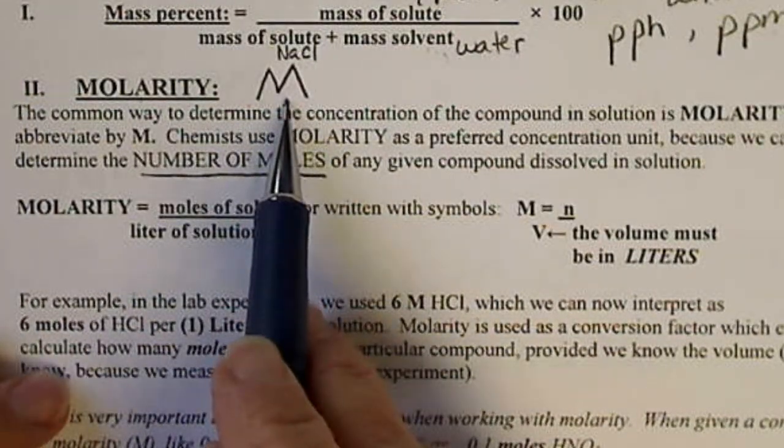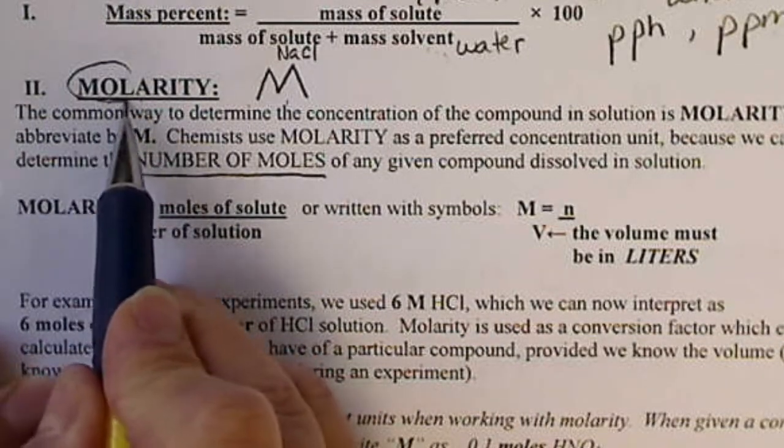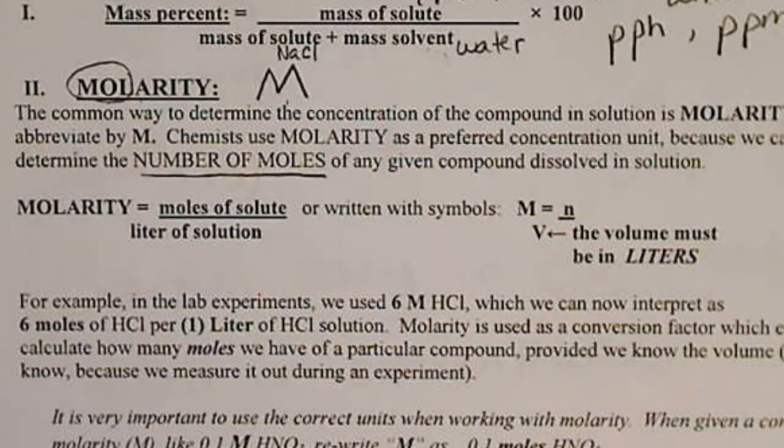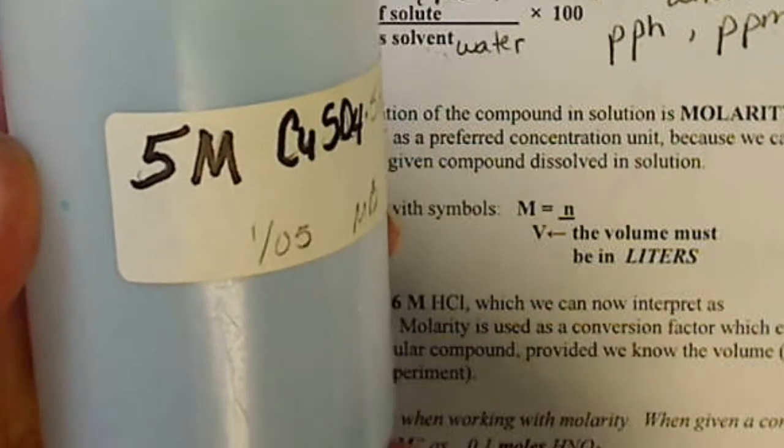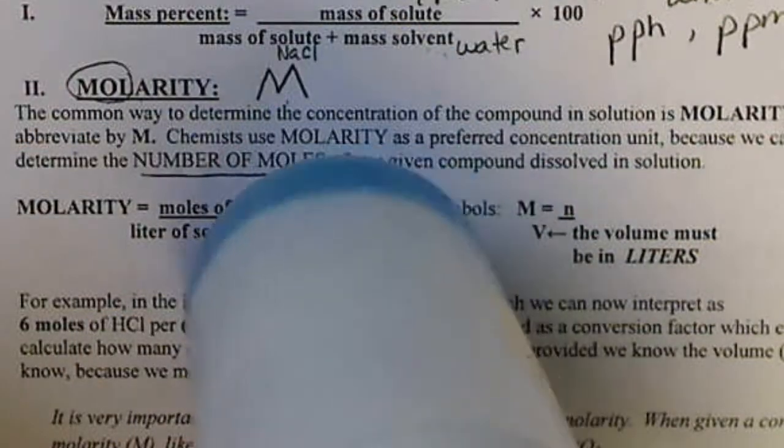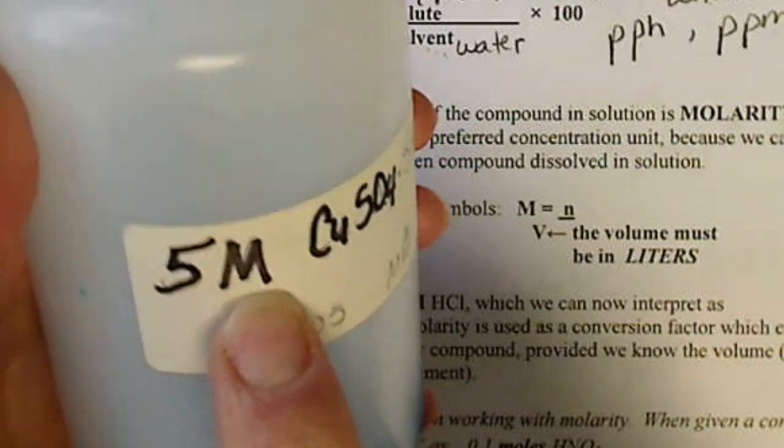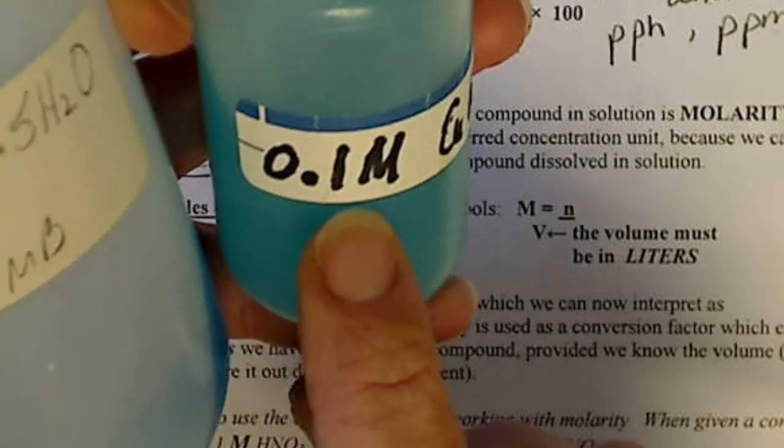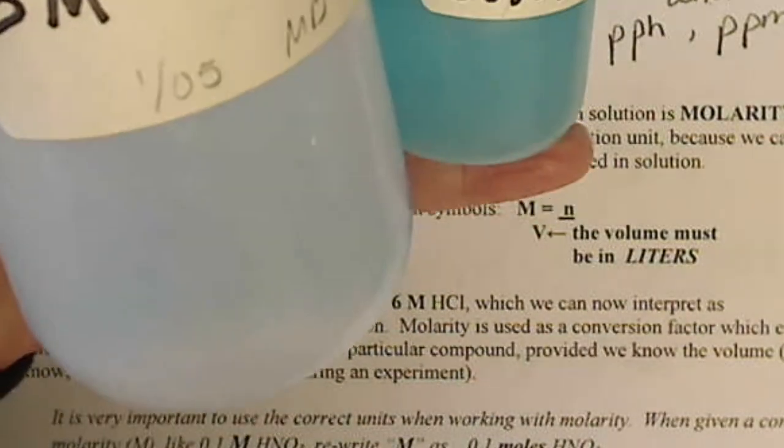And we abbreviate molarity with a capital M. And notice molarity has the root word mole in there. Earlier, we looked at some different solutions of copper. This is a 5 molar. And when I turn it so you can see that's kind of dark blue. So a 5 molar concentration is going to be more concentrated than a 0.1 molar solution.